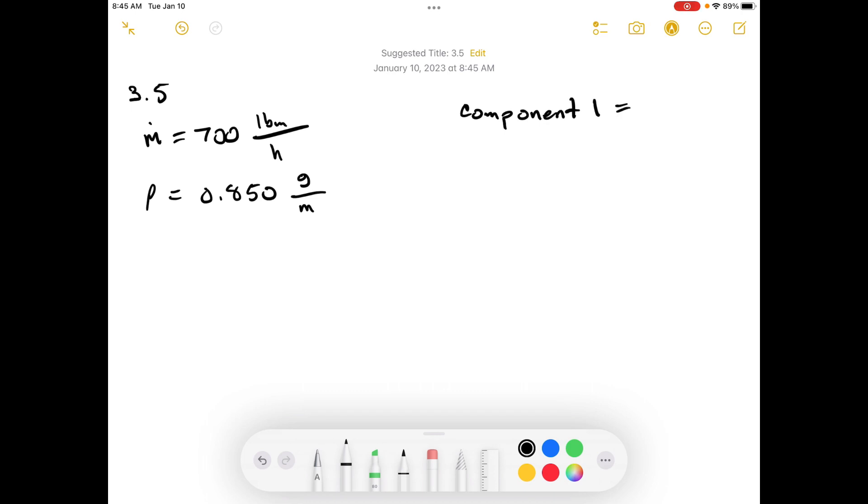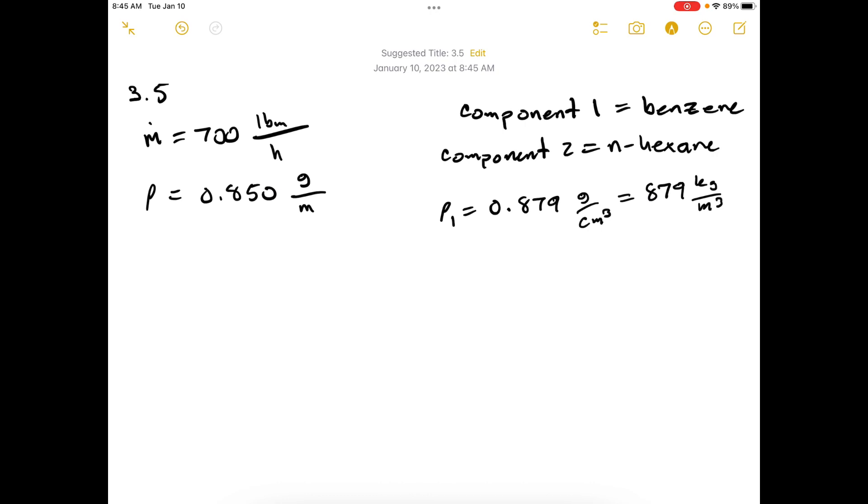Component 1 is benzene. Component 2 is hexane. I converted the densities into kilograms per meter cubed because I think it'll be easier to convert from there.